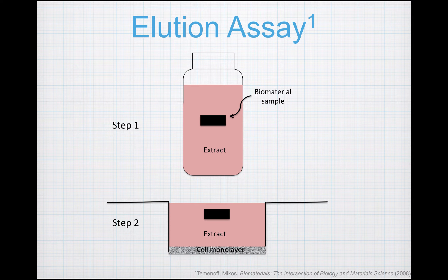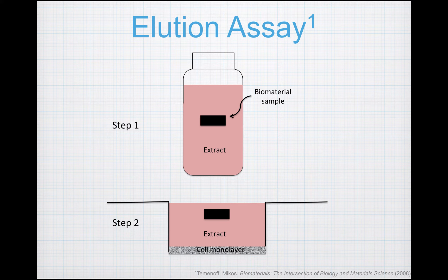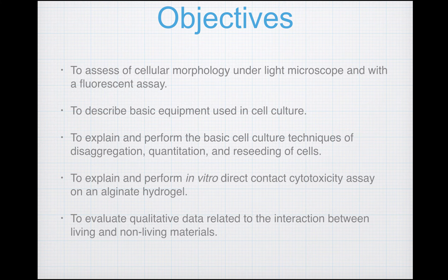In an elution assay, the goal is to determine the cytotoxicity of leachable molecules found in biomaterials, such as unreacted monomers or degradation products. The material is immersed in an aqueous media — like cell culture media or a biocompatible oily media — for 24 hours, so anything leachable will diffuse out into the media. This media is called the extract. After 24 hours, the extract is applied over the cell monolayer for 24 more hours, and cell viability is then determined by the same methods as in the previous two assays.